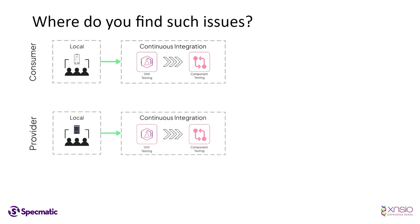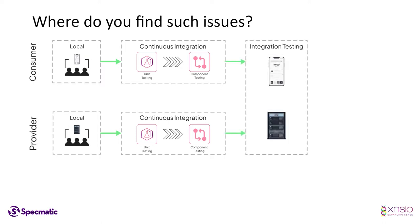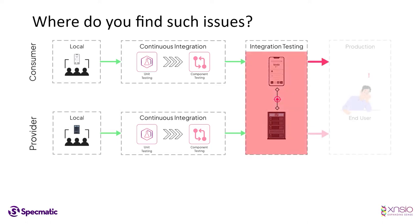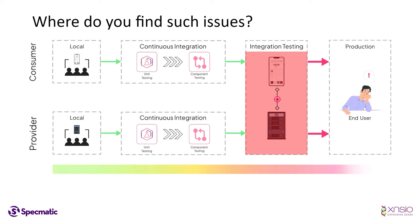The first instance where we may discover such issues is when we deploy both applications together in an environment such as integration testing, and then we realize there is an incompatibility issue. Such issues first of all compromise your integration testing environment and block your path to production, and because such issues are found so late in the cycle they also make it harder to fix — which is what is represented by the heat map at the bottom.